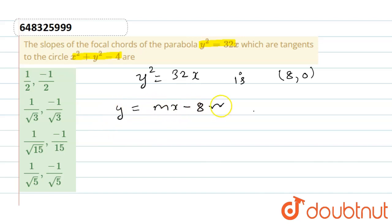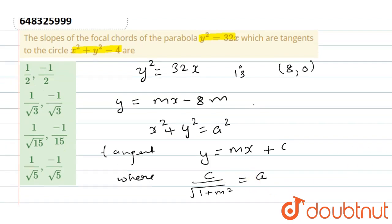Now for the circle x² + y² = a², the tangent equation is y = mx + c, where c divided by √(1 + m²) is equal to a.